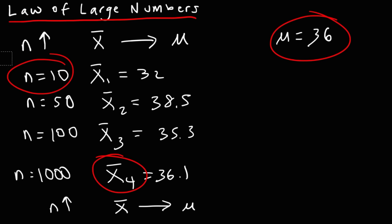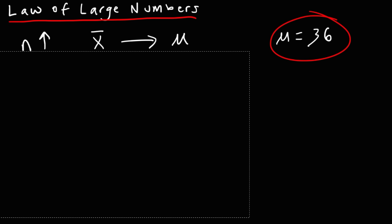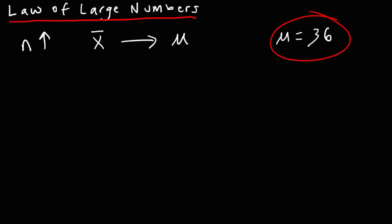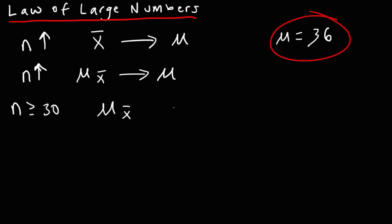If the mean of one sample can approximate the population mean when the sample is large enough, the same is true for many samples. As n increases, the mean of the sampling distribution will approximate the population mean. If n is 30 or more, the mean of the sampling distribution is approximately equal to the population mean.